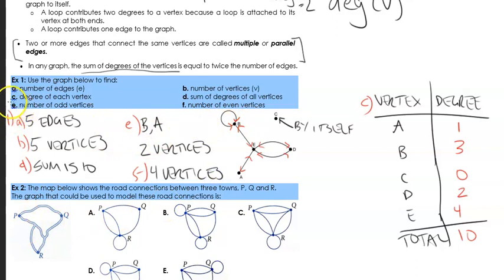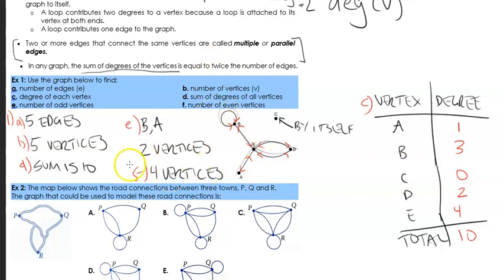It might seem like a weird question to ask about odd and even vertices, but this relates to whether a certain path or trail can be conducted — getting from one point to another without going over the same edge twice. For example, starting at B, following its loop back to B, then going to E, then D, then back to E, then to A — you've covered every edge without overlapping. This works because there are exactly two odd vertices. A different number of odd vertices would prevent this, which we'll explore later.